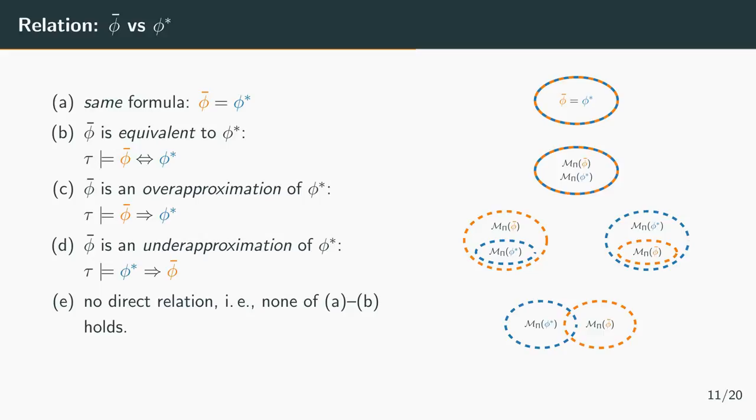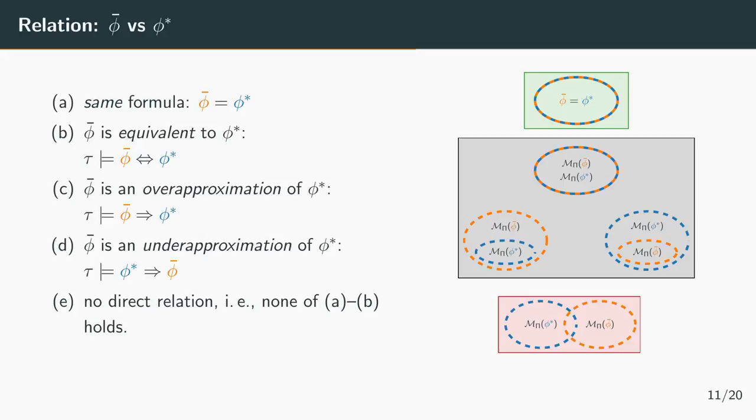The optimal case is when the learned and the target formula are the same. And in the worst case they have no relation at all. But in between it's more difficult to decide whether the learned formula is useful. You might think if they are equivalent that's great, but you have to keep in mind that they are equivalent given the planning task and can look completely different, and the user might not be able to identify the equivalence.